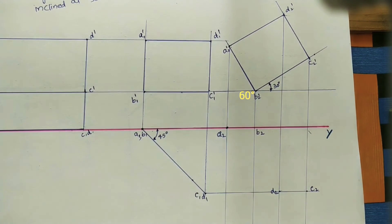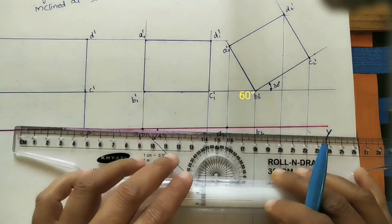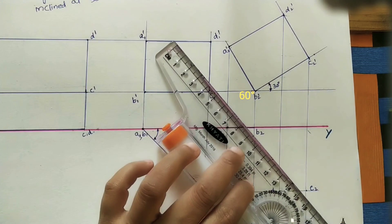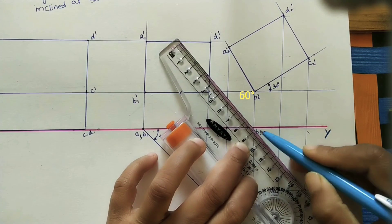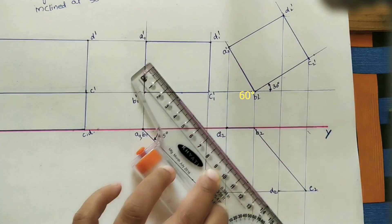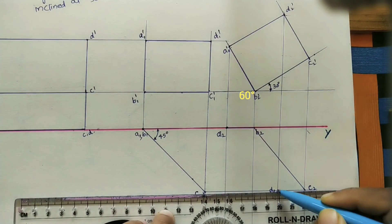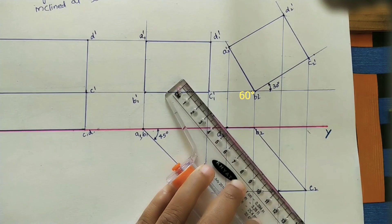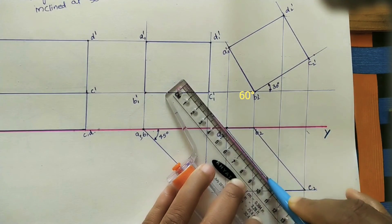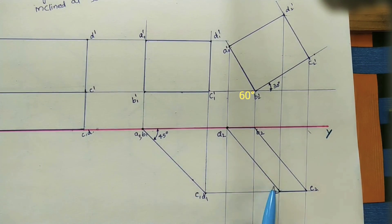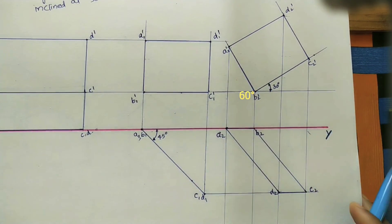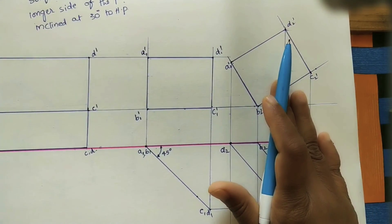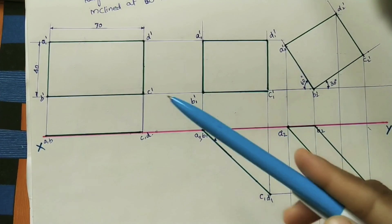Join all the intersection points A2, B2, C2, D2 with a scale to get the final top view. This completes all three assumptions: first assumption (entire plane in VP), second assumption (45° to VP), and third assumption (60° to HP). This is the final front view and final top view. Make sure all front views and top views are darker than the projector lines.